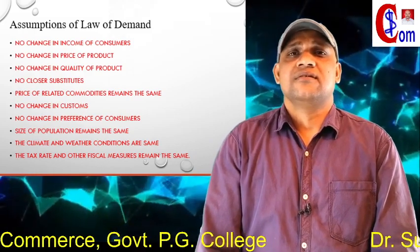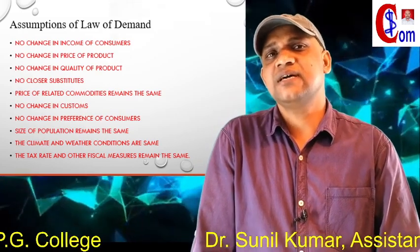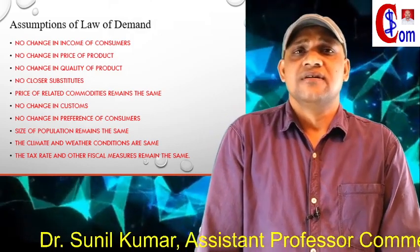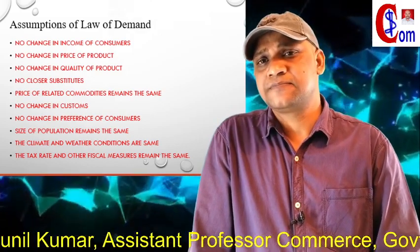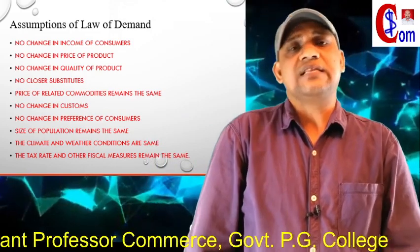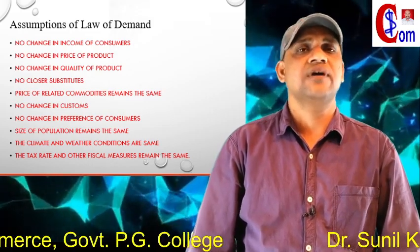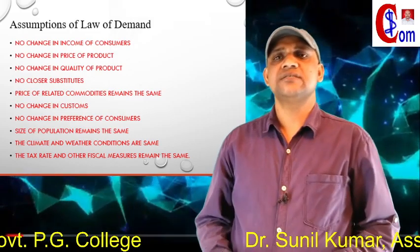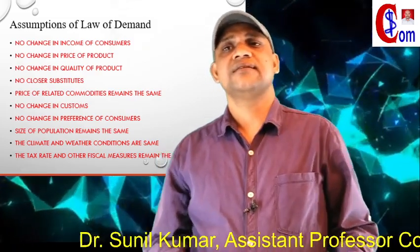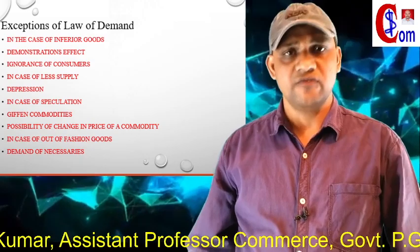Now I am going to explain the exceptions of the law of demand — those cases which do not follow the law of demand. The first exception is inferior goods. The law of demand does not apply in the case of inferior goods. Use of inferior goods is generally looked down upon. When income increases, people migrate to use superior goods. When the price of inferior goods decreases, it is seen as a further reason for the decline in quality of those goods.